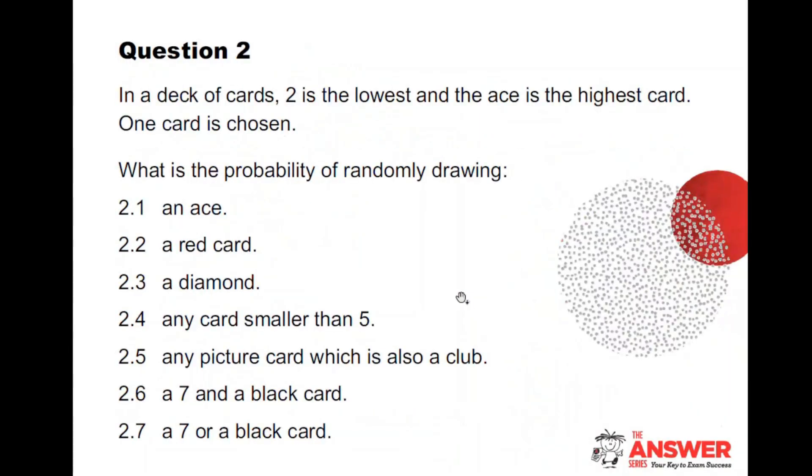The second question. In a deck of cards, two is the lowest and the ace is the highest card. So I've actually told you where the ace is, because there is one question that is going to come here. One card is chosen. What is the probability of randomly drawing an ace, a red card, a diamond, a card smaller than five, which is why I need to know where that ace is, any picture card which is also a club, a seven and a black card, a seven or a black card.